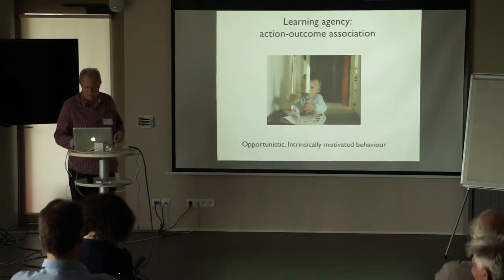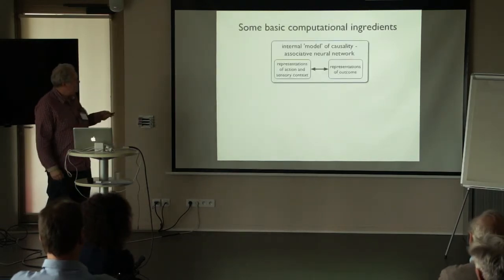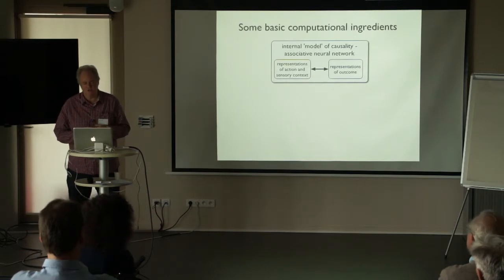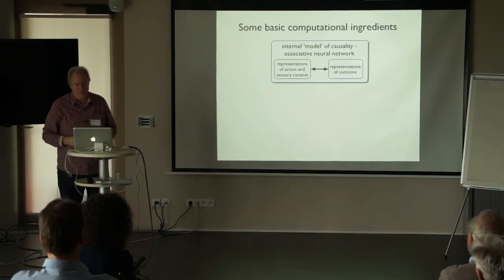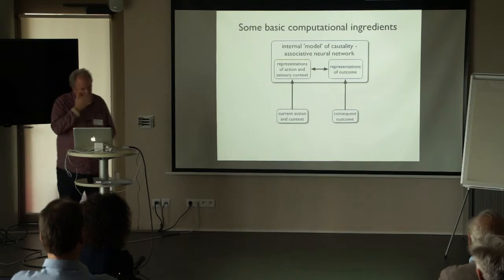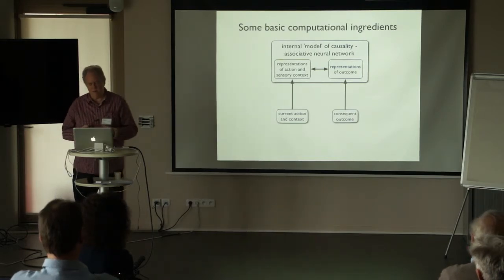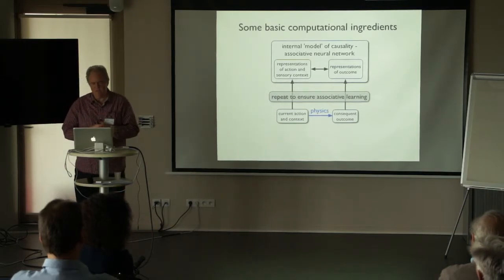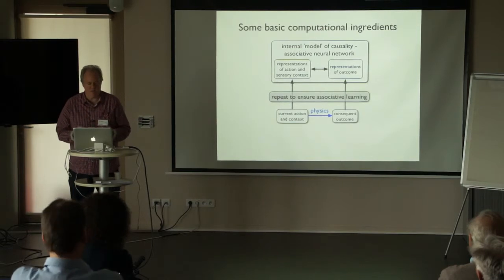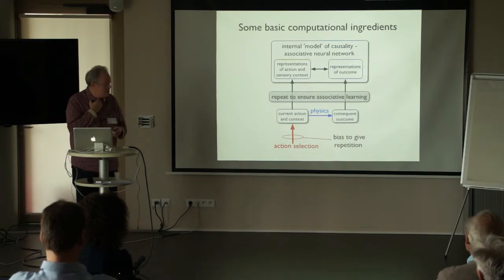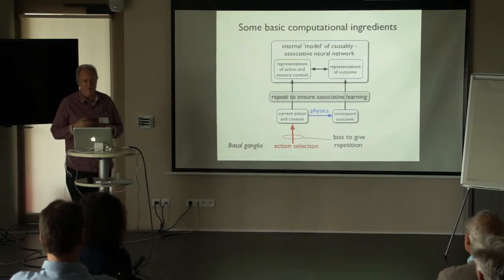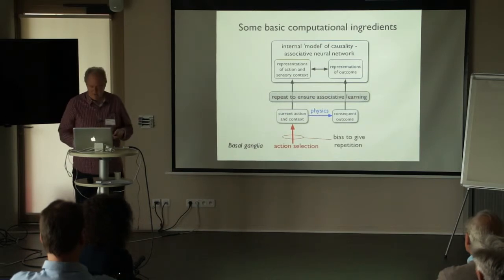So we're interested in how this might work. What we think is going on is he's trying to build an internal model of causality. There's some sort of associative neural network that's going to glue together representations of action and sensory context — do this with these things and the outcome comes apart. In the world, he's got to be presented with that action and context and the consequent outcome repeatedly to ensure associative learning. The physics of the world will ensure that if he does the action in the context, the outcome ensues. This comes down to a problem of action selection — having to bias our policy to repeat the action given that context. This is where we think the basal ganglia will be important, governing action selection.